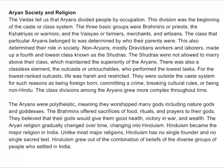Aryan society and religion. The Vedas tell us that Aryans divided people by occupation. This division was the beginning of the caste or class system. The three basic groups were Brahmins or priests, the Kshatriyas or warriors, and the Vaishyas or farmers, merchants and artisans. The class that a particular Aryan belonged to was determined by who their parents were, which also determined their role in society. Non-Aryans, mostly Dravidians — workers and laborers — made up a fourth and lowest class known as Shudras. The Shudras were not allowed to marry above their class, which maintained the superiority of the Aryans. There was also a classless element, the outcasts or untouchables, who performed the lowest tasks. For the lowest ranked outcasts, life was harsh and restricted. They were outside the caste system for such reasons as being foreign-born, committing a crime, breaking cultural rules, or being non-Hindu.